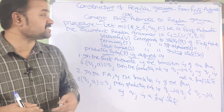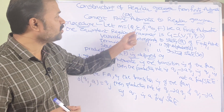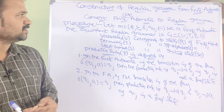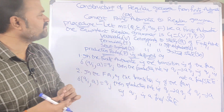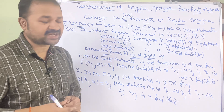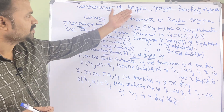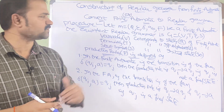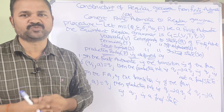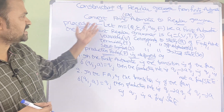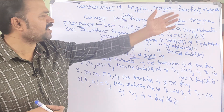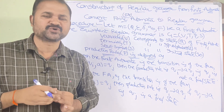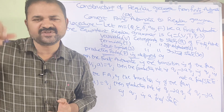Let us discuss construction of regular grammar from finite automata. A finite automata will be given as input, and for the corresponding finite automata, we have to construct the regular grammar. So finite automata is the input and regular grammar is the output. We can also call this: convert finite automata to regular grammar. First let us see the procedure, and then we will see an example.